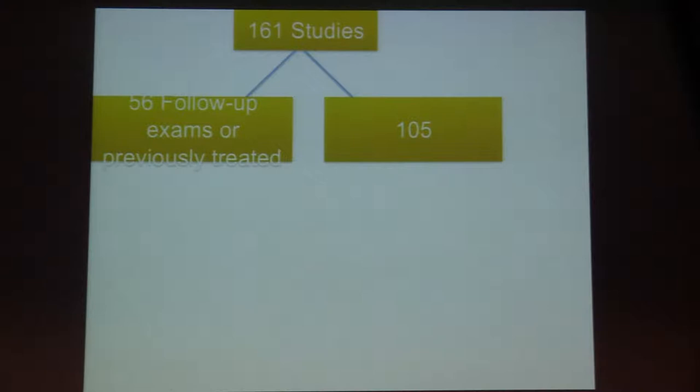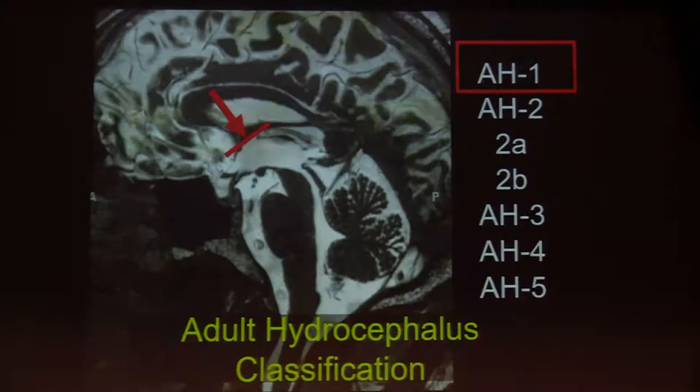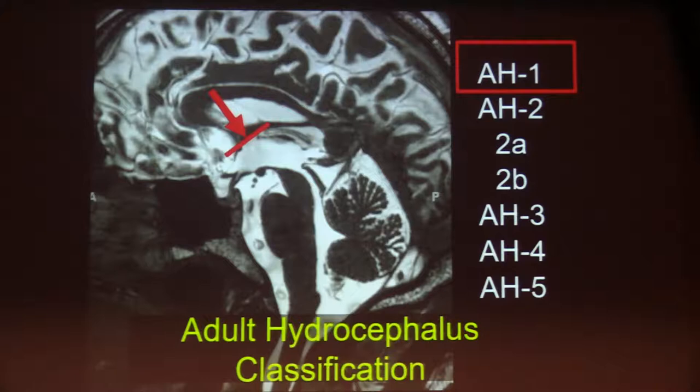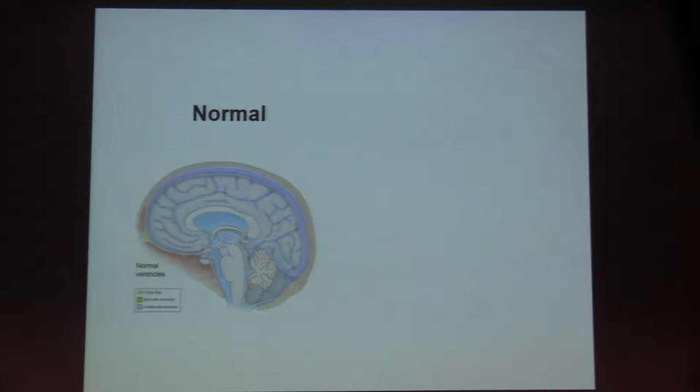105 were surgically naive. Of those, we looked at 89 because of the number of limited cases. Among those 89 cases, I'll now go through and show you some of these different patterns of adult hydrocephalus.